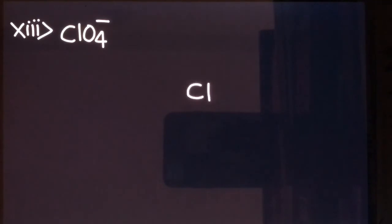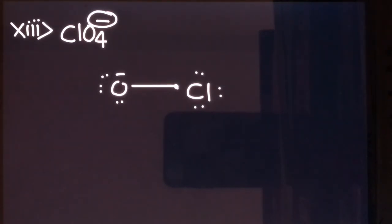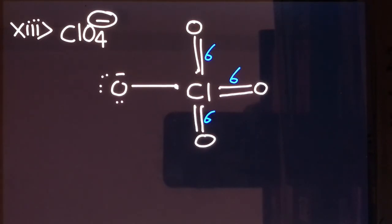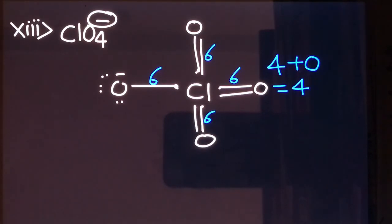Now let's see the perchlorate anion ClO₄⁻. Chlorine has seven outermost electrons and forms bonds with four oxygens. With one negative charge, one oxygen is attached with a single bond with three lone pairs on it, and the remaining three oxygens are attached with double bonds. All valence electrons of chlorine are utilized in bonding, so there is no lone pair on chlorine. The number of sigma bonds is four and lone pair is zero — steric number is four and hybridization will be sp3.